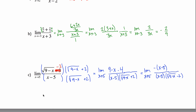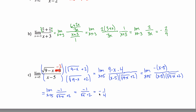Now I can cancel out those x minus 5 terms. What's left is the limit as x approaches 5 of negative 1 over the square root of 9 minus x plus 2. Plugging in: negative 1 divided by the square root of 4 plus 2, which is negative 1 over 2 plus 2, so negative 1 quarter. I did write a minus sign by mistake earlier instead of plus, but it's fixed here. These would be the answers, and I'll end the video here.